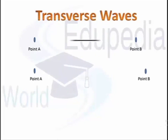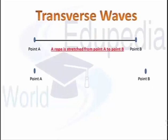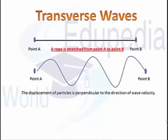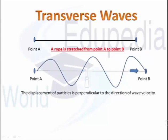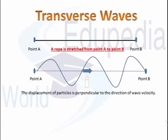An example of transverse waves: if you stretch a rope between two points and move one end up and down, a crest forms and travels along the rope. Every particle moves upward then downward — that displacement propagates to each successive particle. The wave velocity is along the rope (horizontal), while particle displacement is perpendicular, so this is a transverse wave.